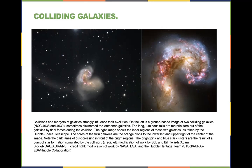The cores of the twin galaxies appear as the orange blobs in the lower left and upper right of the image center. The pink and blue regions you see are actually star clusters, because as a result of the merging process, there may be a burst of star formation due to the collision between two galaxies.